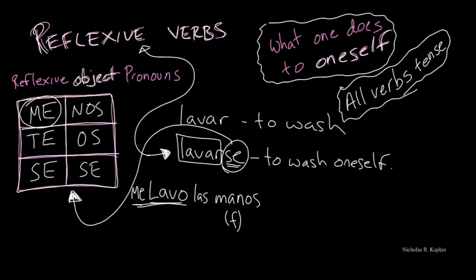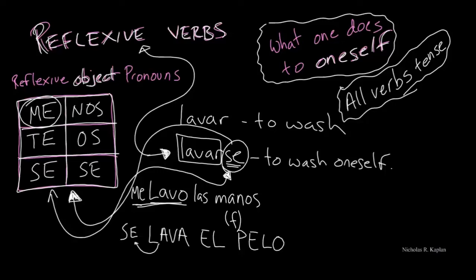How would we say 'he washes his hair'? We would start with our verb lavar: lava. Then we have to deal with our reflexive portion: se, and it goes before the conjugated verb. Se lava el pelo. Again, we don't say his, her, or mine.